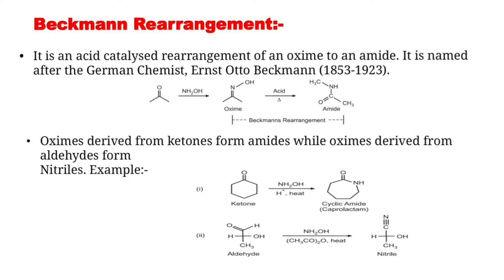First, we will start with the Beckman Rearrangement. It is an acid-catalyzed rearrangement of an oxime to an amide, named after the German chemist Ernst Otto Beckman. Oximes derived from ketones form amides, while oximes derived from aldehydes form nitriles.